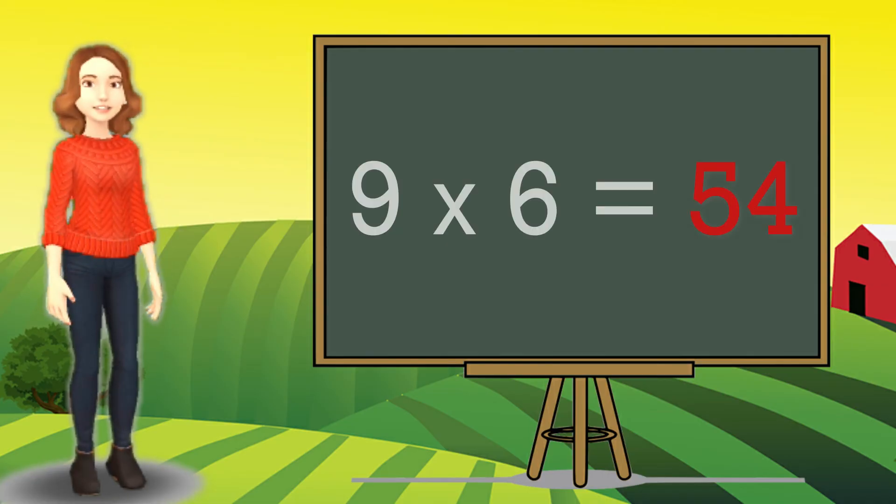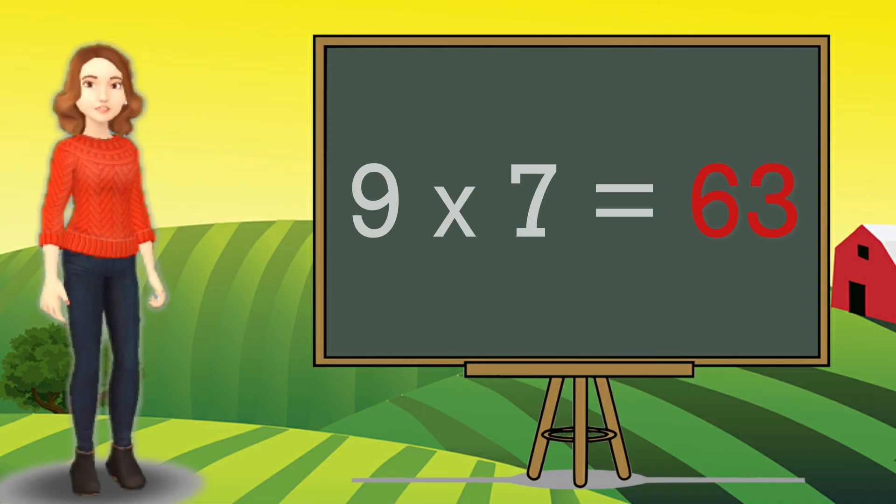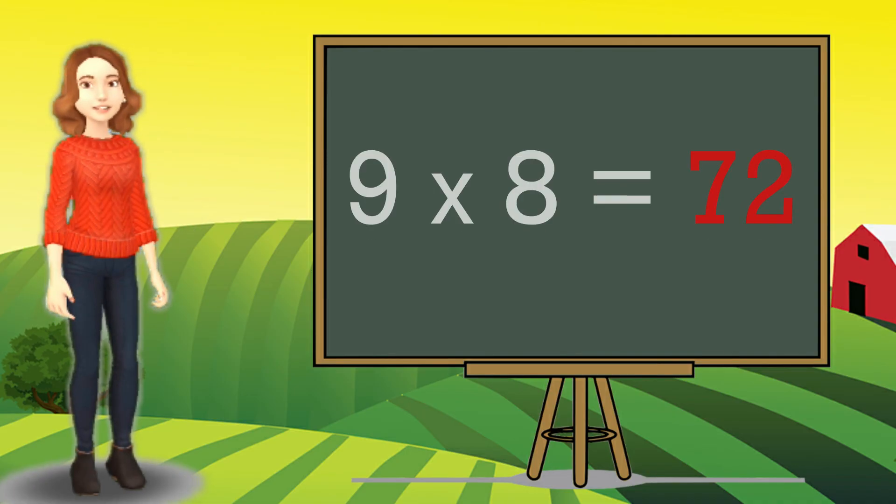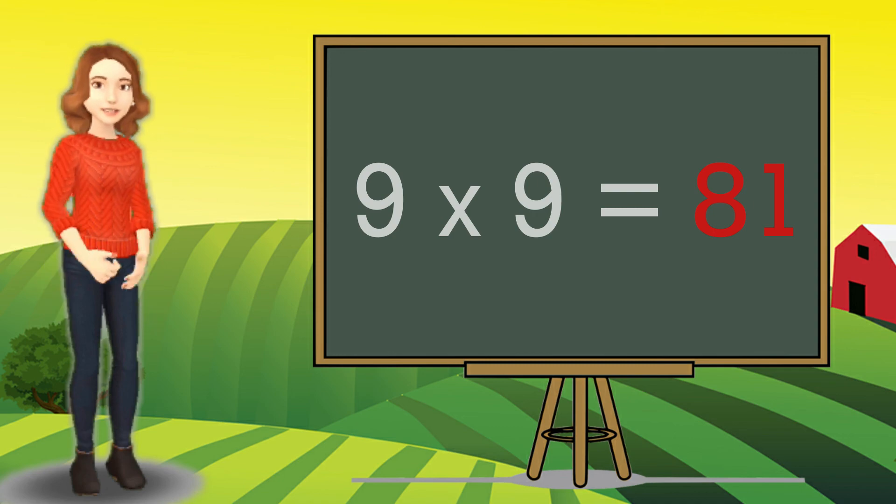9 six are 54. 9 sevens are 63. 9 eights are 72. 9 nines are 81. 9 tens are 90.